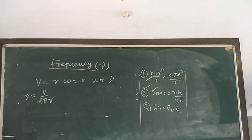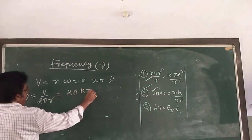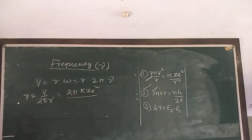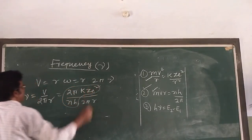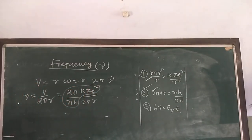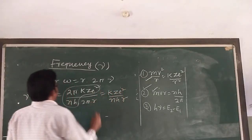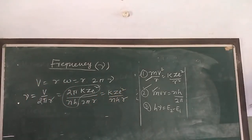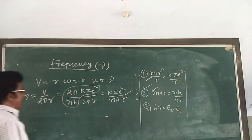So ν = v/(2πr). Now putting the value of v = 2πkze²/(nh) into this, we get ν = kze²/(nhr).